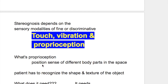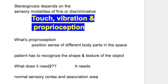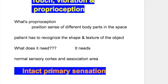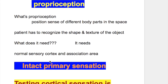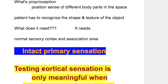Proprioception is the position sense of different parts of the body in space. The patient has to recognize the shape and texture of the object, and it needs a normal sensory cortex and association area and intact primary sensations.